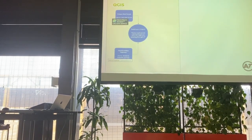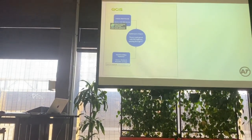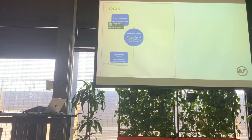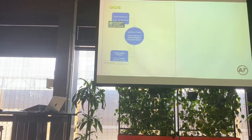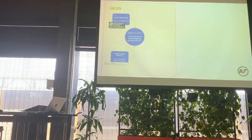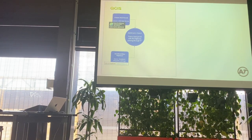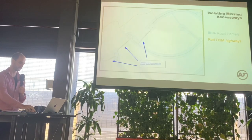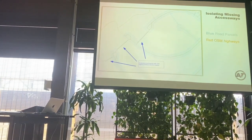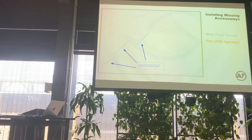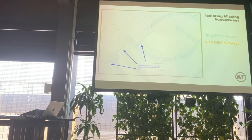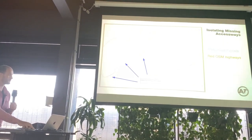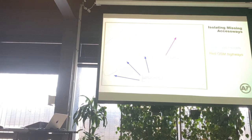In QGIS I brought in the parcels from the LINZ data service, and OSM highways via Geofabric, then did a disjoint spatial query — I wanted every road parcel that has no highway intersecting with it. That gives me my shortlist. Visually, the blue is road parcels and red is OSM highways; the three on the left are already mapped with highways running through them, so only the one up here with no highway would come through as a candidate.